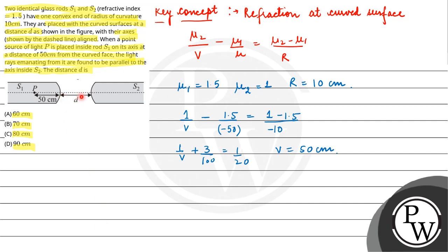Now the distance between these two is d. Our image is at 50 cm. So for the second surface, the object distance is d minus 50.